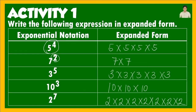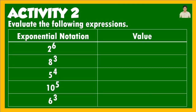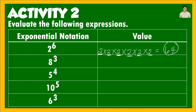For Activity 2, evaluate the following expressions. This time, we not only write the expanded form — we solve for the actual answer. For 2 raised to the 6th power: 2 times 2 times 2 times 2 times 2 times 2. Multiplying step by step: 2×2=4, ×2=8, ×2=16, ×2=32, ×2=64. Therefore, 2 raised to the 6th power is equal to 64.